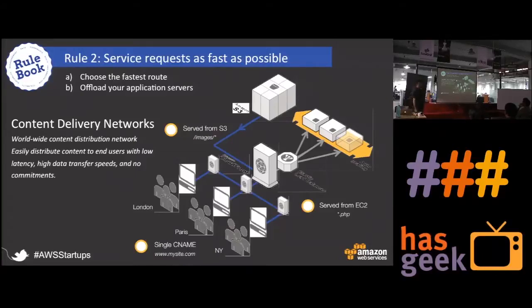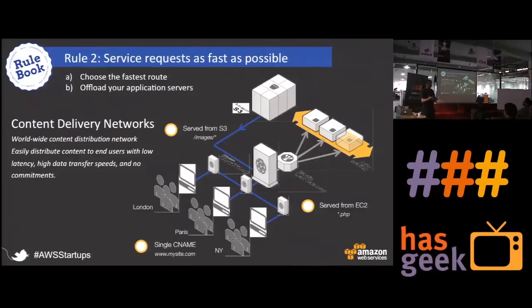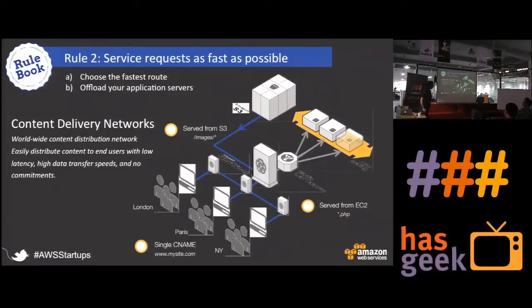Offload your application servers. If there are certain services available, don't load your compute nodes to give out those services. For example, content delivery networks — CDNs. Try to offload static and dynamic content to CDNs rather than letting that come back to the compute nodes. This is a very important concept — it takes almost 50% load off your compute nodes so they can do what they do best.